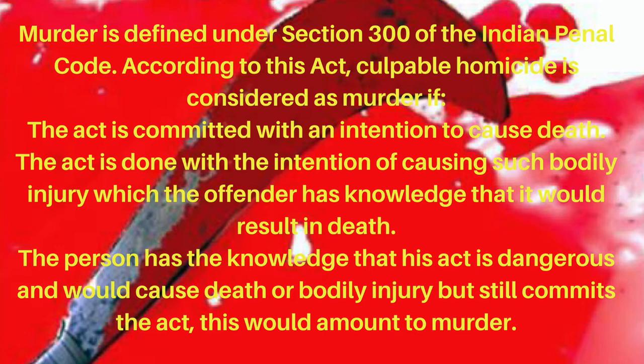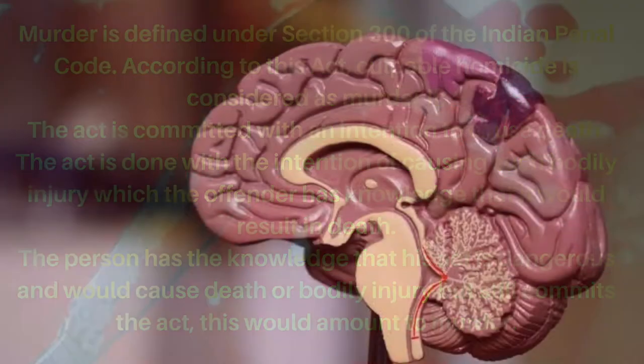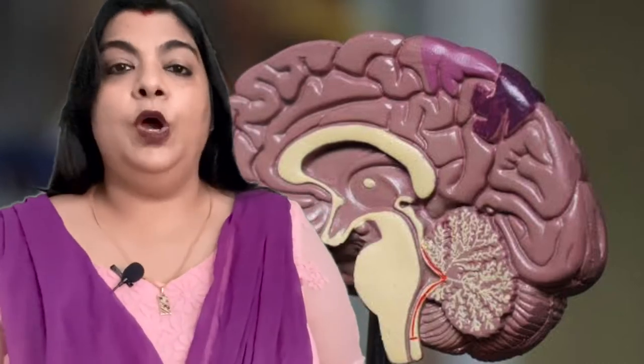Murder is defined under Section 300 of the Indian Penal Code. According to this section, culpable homicide is considered as murder if: first, the act is committed with an intention to cause death; second, if the act is done with the intention of causing such bodily injury which the offender knows would result in death; third, if the person has knowledge that his act is dangerous and would cause death or bodily injury but still commits it. The definition of murder also states that there is an intention to cause death or such bodily injury that the person will die.